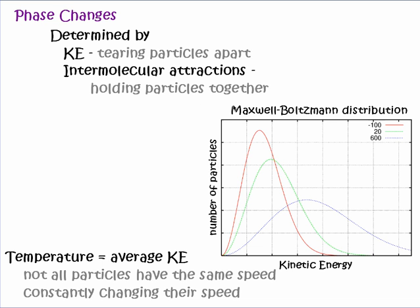Temperature is defined as the average kinetic energy of the particles. This has two implications: first, not all particles are going to have the same speed — some will be going fast, some slow. Second, an individual particle is constantly changing its speed as it bumps and interacts with other particles, gaining or giving away energy and changing speed.